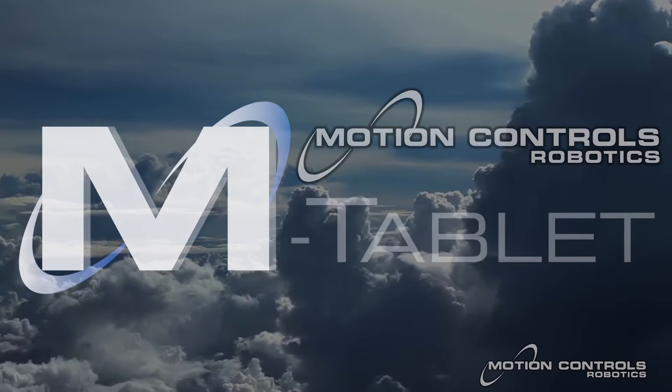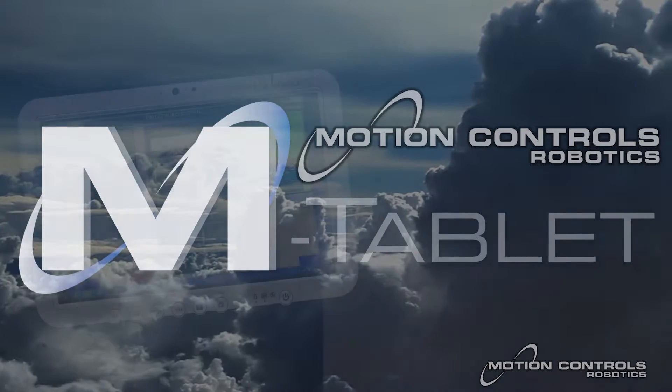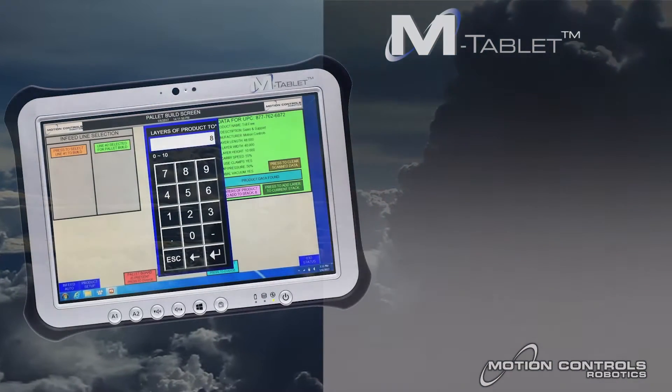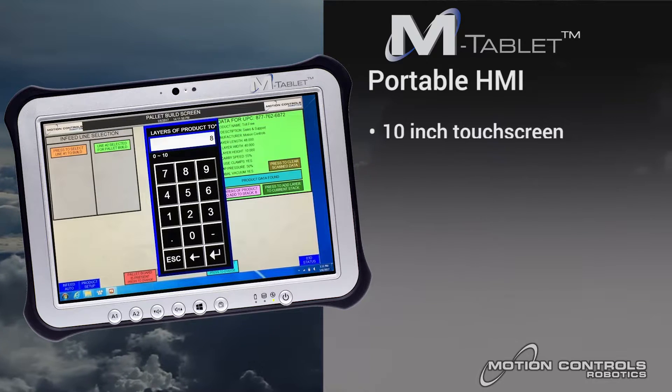MCRI's M-Tablet Portable HMI allows operators mobility throughout the system to input and gather information or troubleshoot issues. The M-Tablet is made for industrial applications.